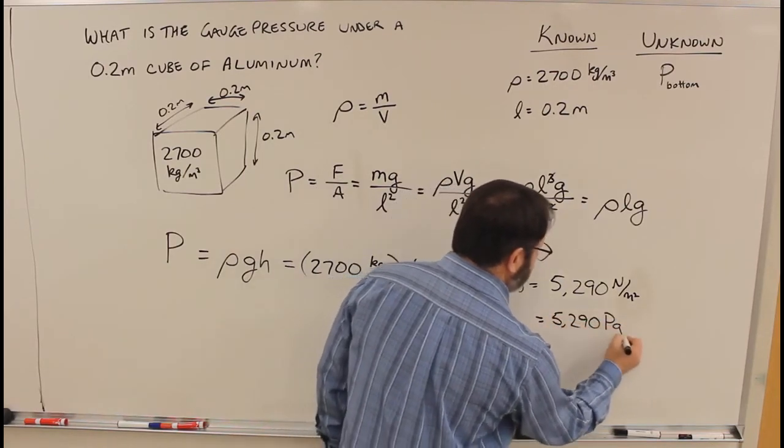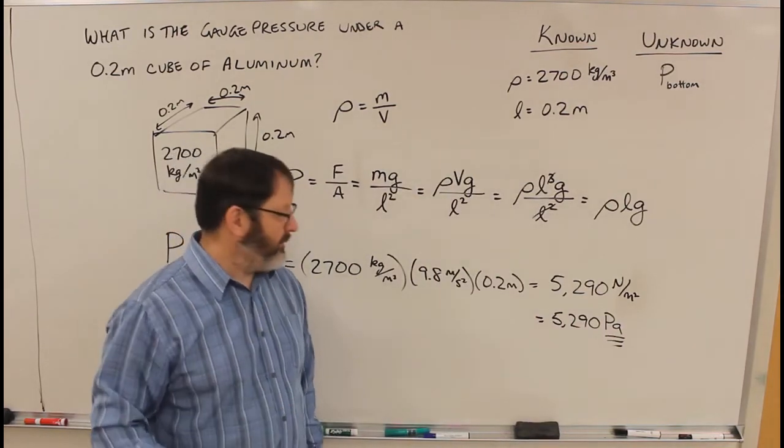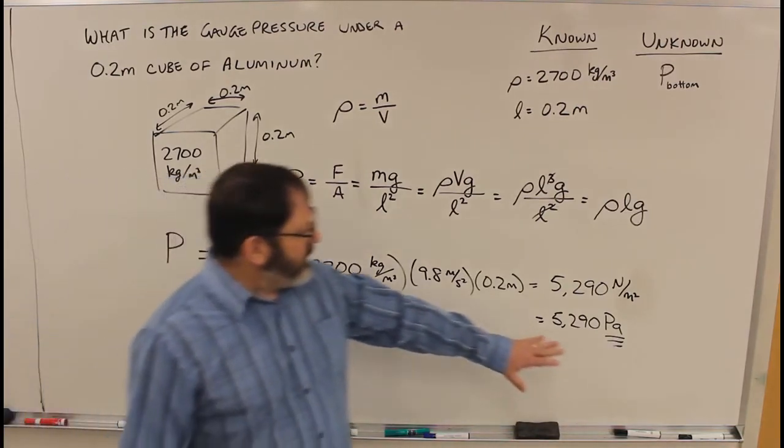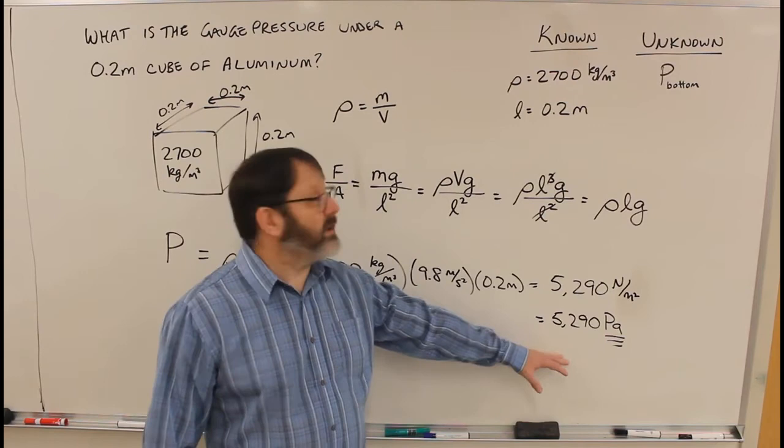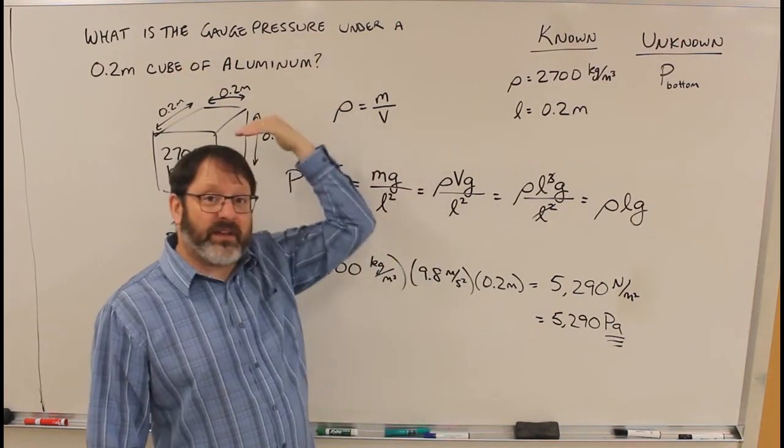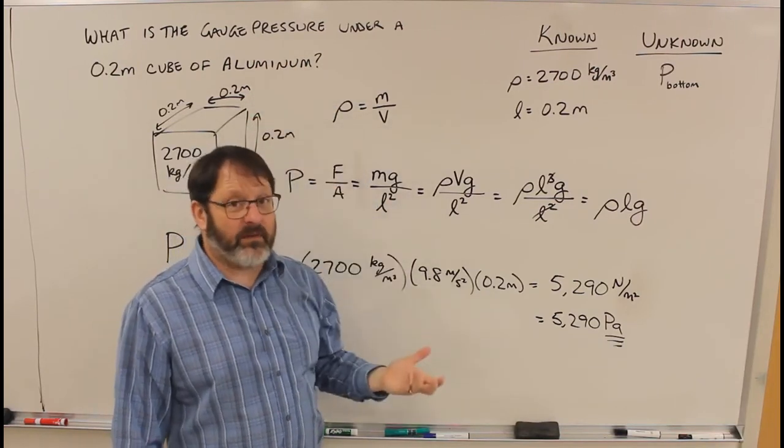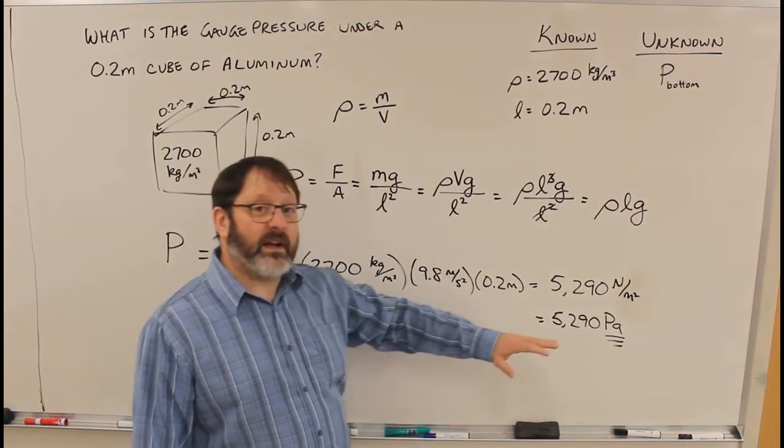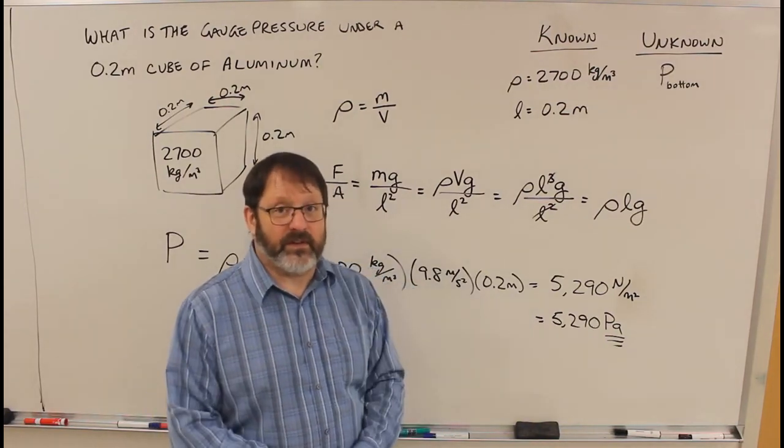Pascal is a capital P, small a. Alright, we figured out the pressure. Now is this the gauge pressure or the absolute pressure? It asks for gauge pressure. We didn't take into account that atmosphere is also pushing down on the top of it, so we've not put atmospheric pressure in. That means this is the gauge pressure. To find out what the absolute pressure is, you would take this and add one atmosphere to it.